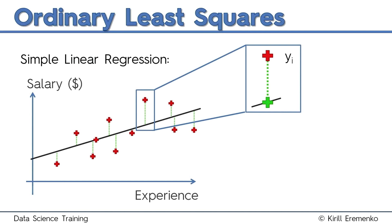The red cross is called Yi — the actual observation. The green cross is called Yi-hat — the modeled or predicted value. That's where the model predicts that person would be earning. The green line is therefore the difference between what they're actually earning and what the model predicts. This applies regardless of what dependent variable you have — whether it's salary or grade at school. It's the difference between the observed and the modeled value for that level of independent variable.